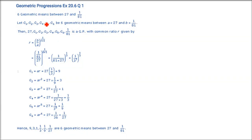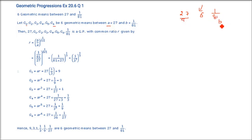Insert 6 geometric means between 27 and 1/81. Now there are certain questions like this, so you need to understand it very patiently. Between 27 and 1/81 you have to put 6 geometric means G1 to G6. The first term is A = 27 and B = 1/81. There is a direct formula: first we find the common ratio R = (B/A)^(1/(N+1)).